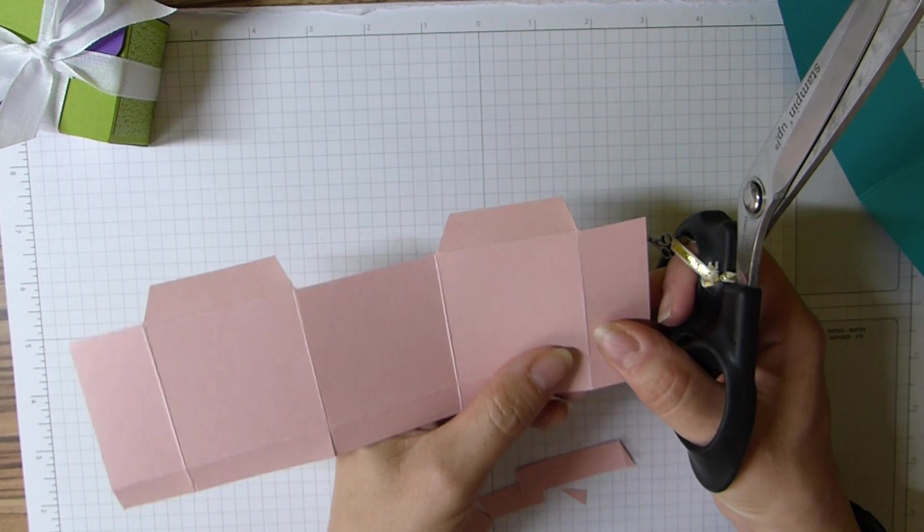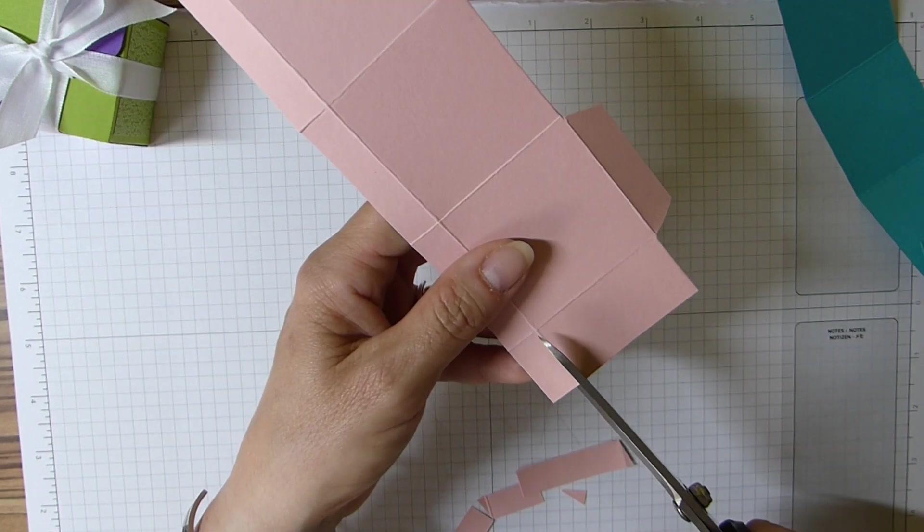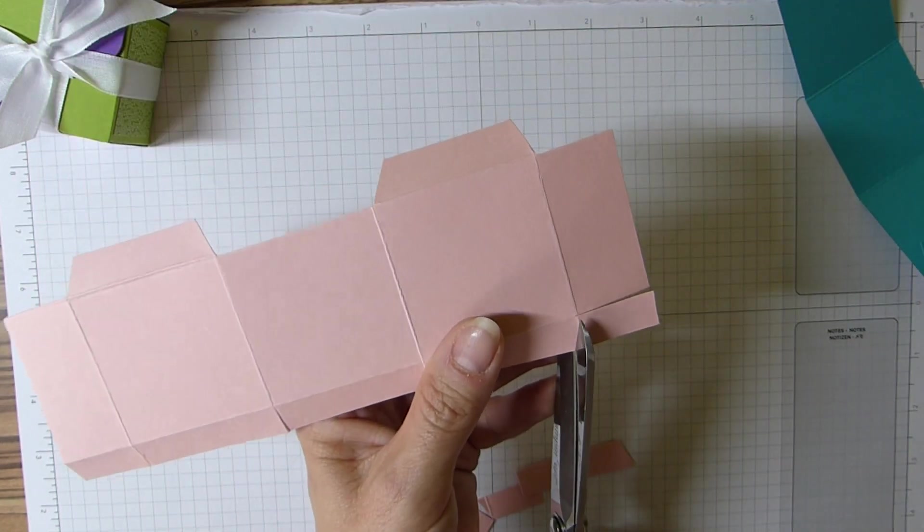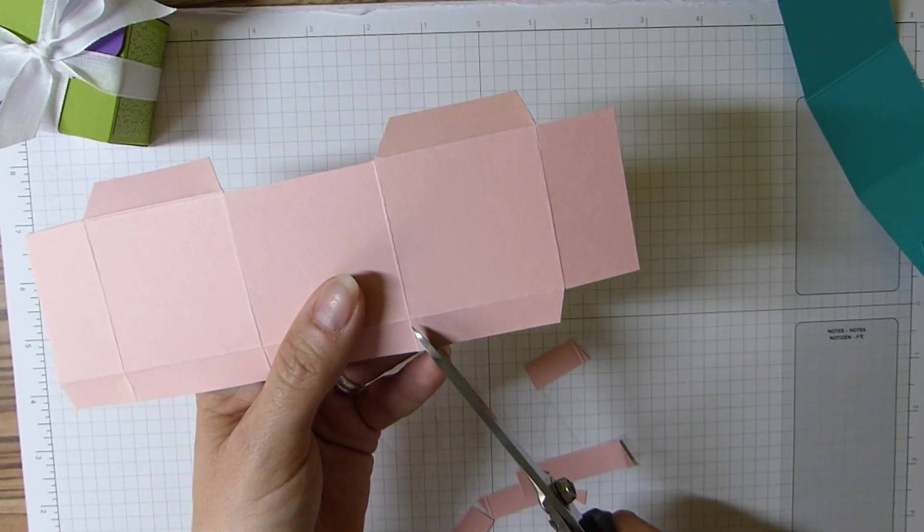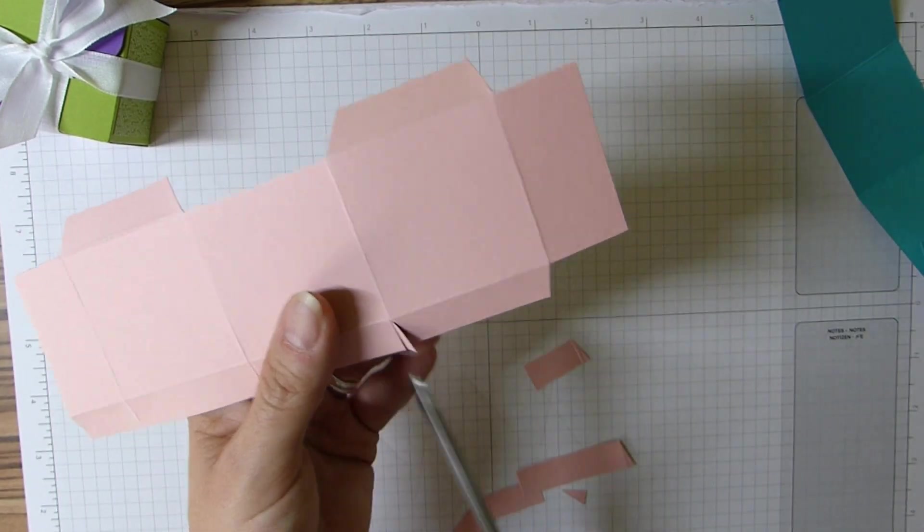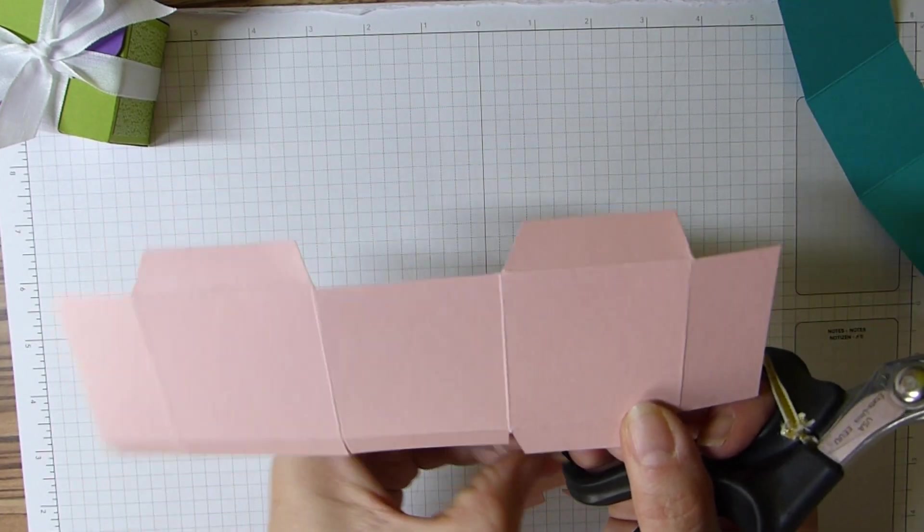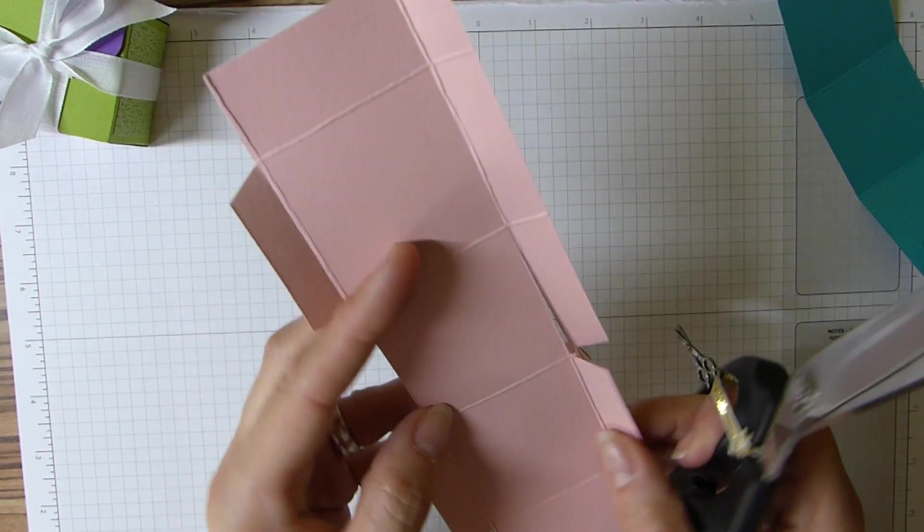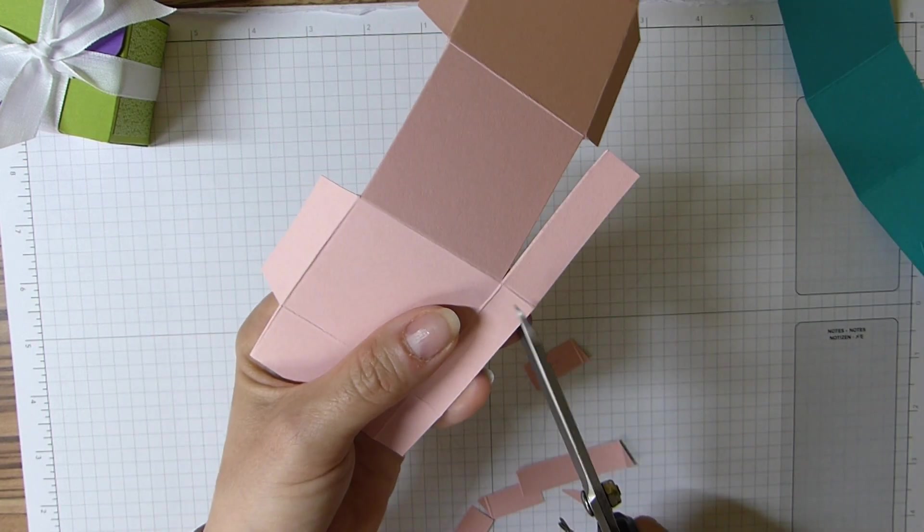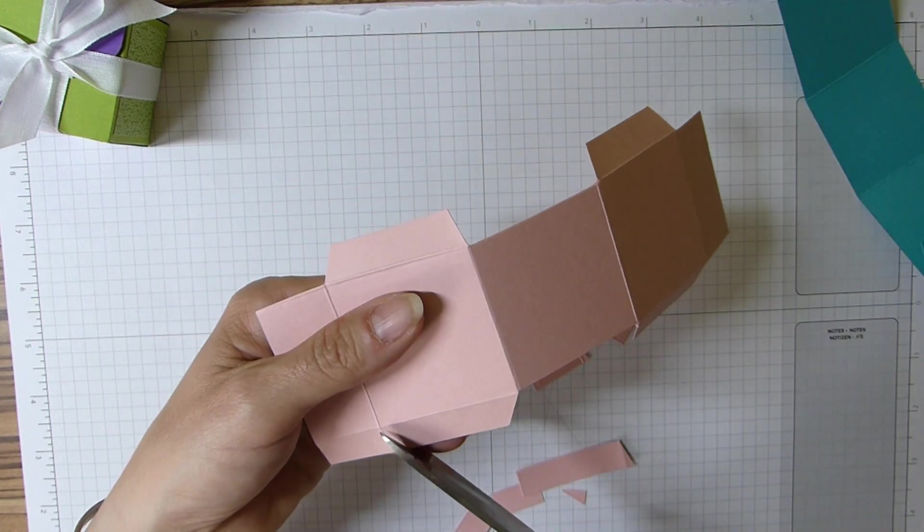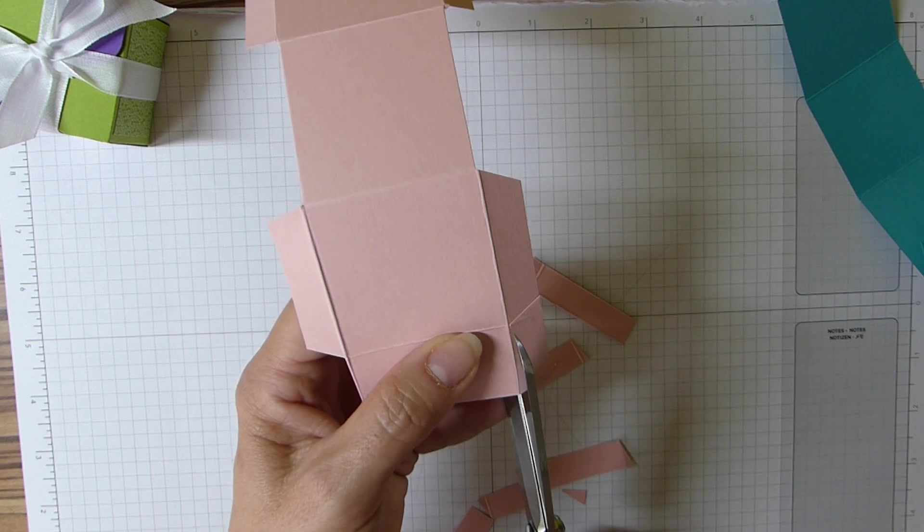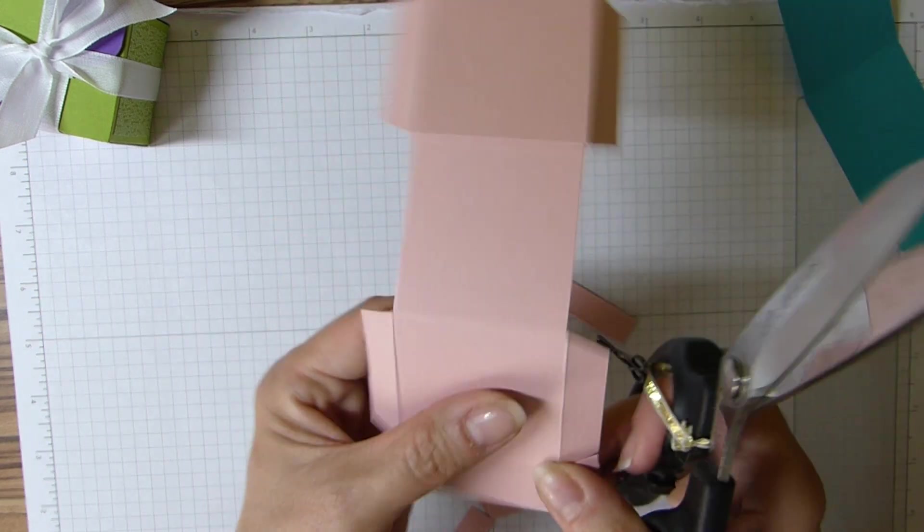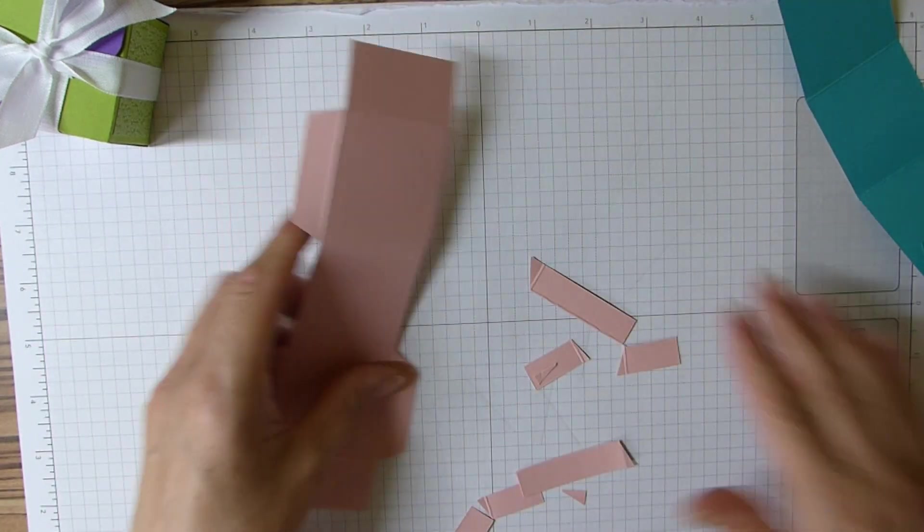We're going to do exactly the same on the opposite side. So we're going to cut away the first rectangle, make a tab out of the second, cut away the middle one, create a tab with the next, and cut away the rectangle.